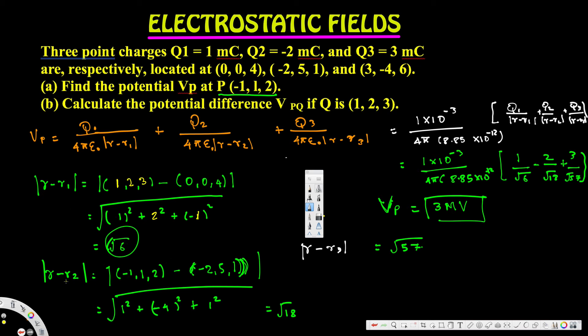For |r - r2| at point Q: (1, 2, 3) minus (-2, 5, 1). Subtracting: (1-(-2))² + (2-5)² + (3-1)² = (3)² + (-3)² + (2)² = 9 + 9 + 4 = 22. So |r - r2| = √22.